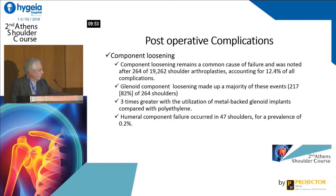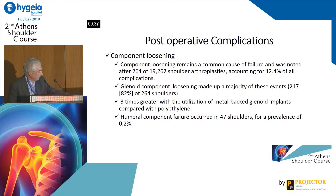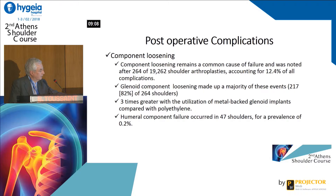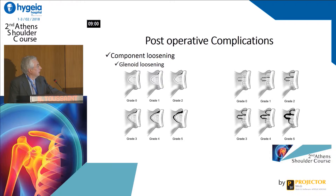Component loosening is a common cause of failure of arthroplasty — 12.4% of all complications. Glenoid component loosening is the majority of this. It's three times greater with the utilization of metal-backed glenoid implants compared with polyethylene. But fortunately, the metal-backed glenoid has been modified over time and is better now, with fewer problems.